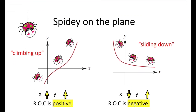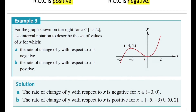To help understand this better, think of 'spidey on the plane.' When the x-value is increasing and the y-value also increases, the rate of change is positive — spidey is climbing up the graph. When x is increasing but y is decreasing, spidey is sliding down and the rate of change is negative. So: climbing up means positive rate of change, sliding down means negative rate of change.